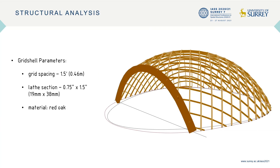The final parameters of our grid shell were a grid spacing of one and a half feet and a lath section of three-quarter inch by one and a half inch, with a material of red oak. Although we could have further reduced the structural strength, we settled on these parameters for considerations of constructability, aesthetics, and material availability.